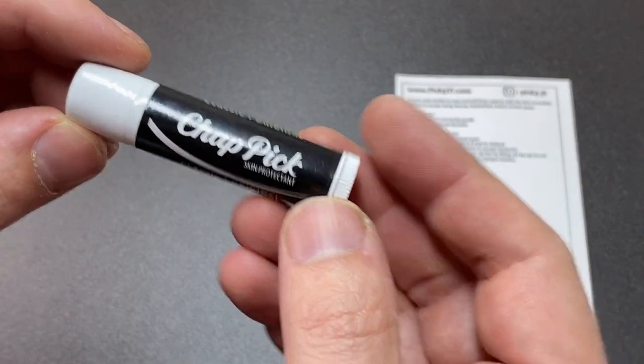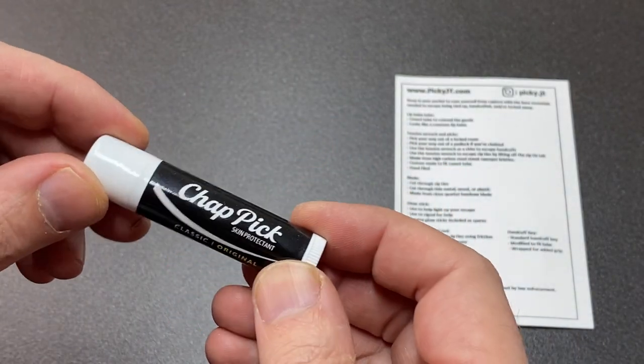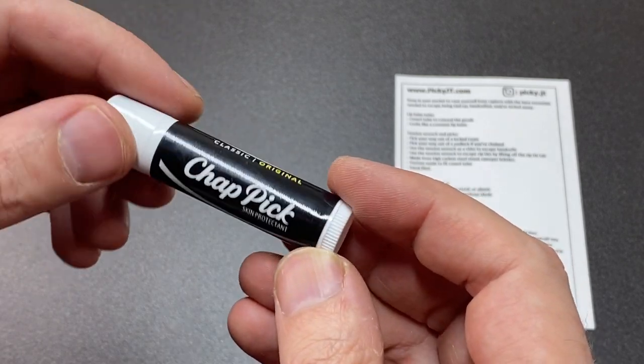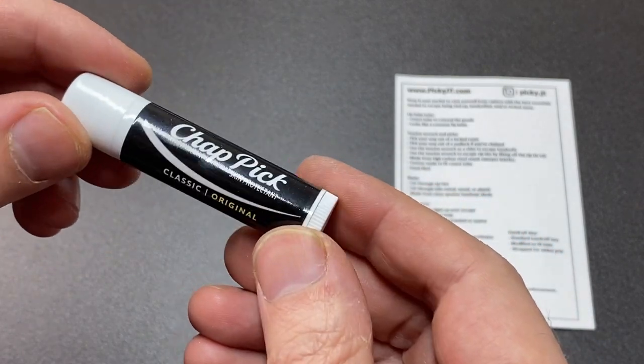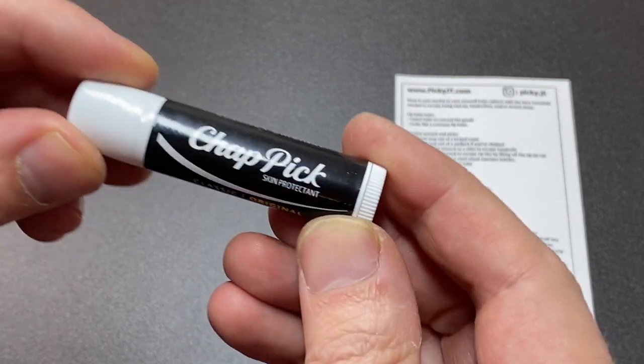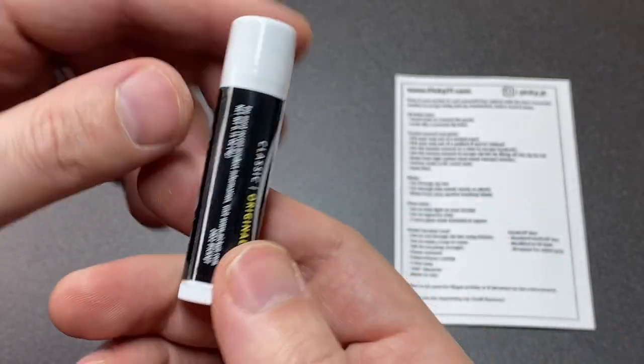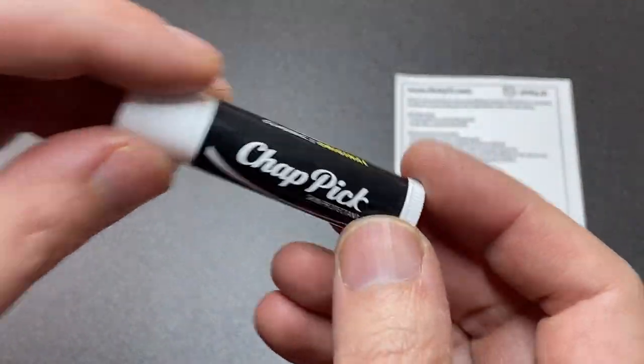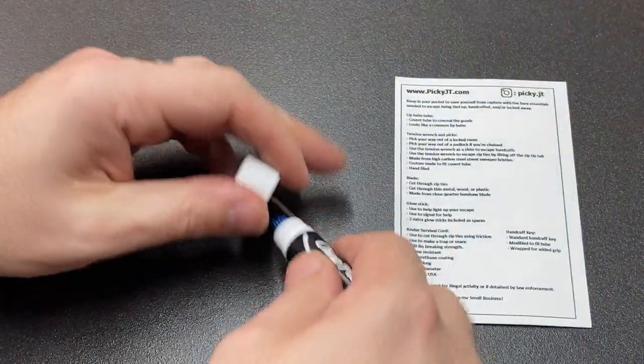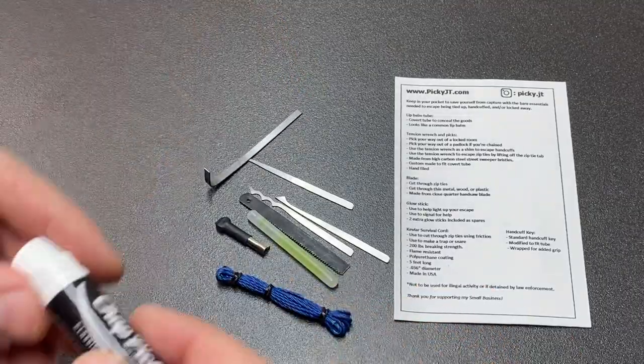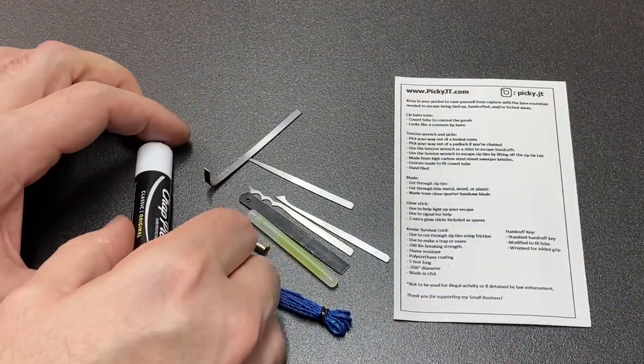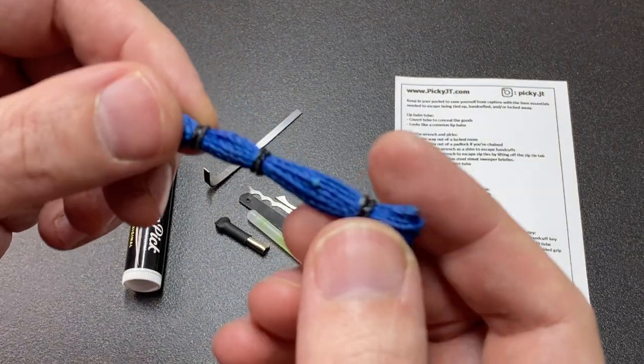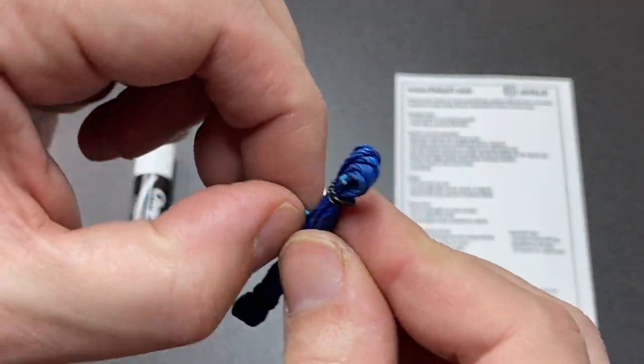So there you go, that was the ChapPick covert SERE set. It's really fun. I really like the presentation and its sense of humor. It really is just like a lip balm tube. I like the amount of tools packed in here - they all work as advertised. It's very useful to have cordage, whether for making a trap, snare, fishing line, or building something.